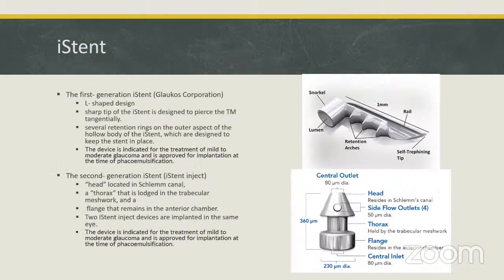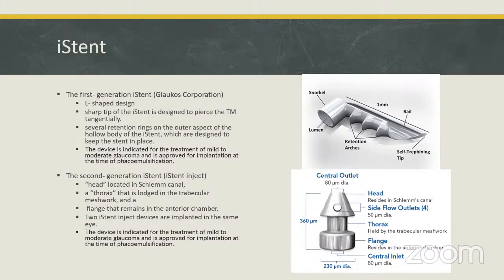The first device is the eye stent, which has two generations. The first generation has an L-shaped design and is designed to pierce the trabecular meshwork tangentially. It has retention rings on the outer aspect of the hollow body to keep the stent in place. It is indicated for mild to moderate glaucoma and is approved for implantation at the time of phacoemulsification. The second generation eye stent has a head, thorax, and phalange that remains in the anterior chamber. Two eye stent inject devices are implanted in the same eye and it is also approved for mild to moderate glaucoma combined with phaco.